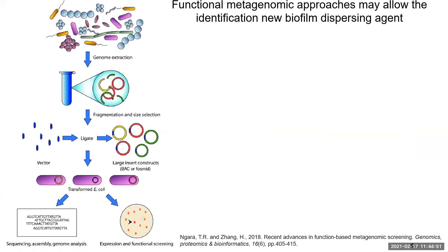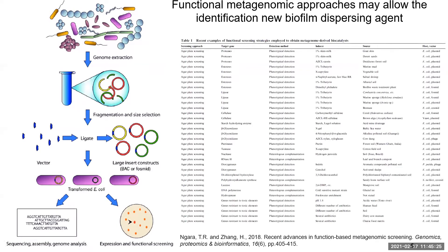Another approach to find new biofilm dispersion agents is our lab's functional-based high-throughput screening. The workflow is as follows: first, we do genome extraction from the environment, then cut the environmental DNA into the right size and insert it into an empty vector. The recombinant plasmid is then transformed into E. coli to express the target protein. Using this method, people have discovered many enzymes from diverse sources. The key challenge is how to distinguish a positive response from background signals, which requires an accurate and sensitive probe.